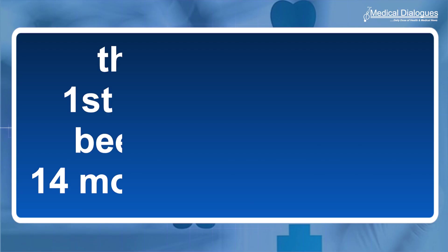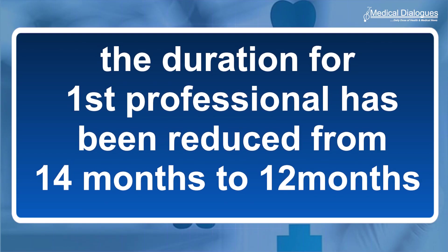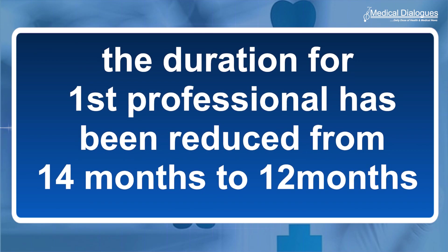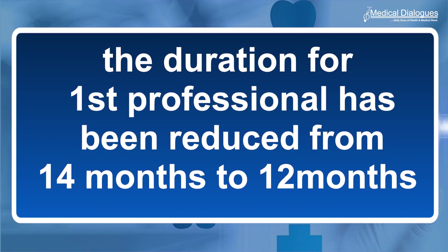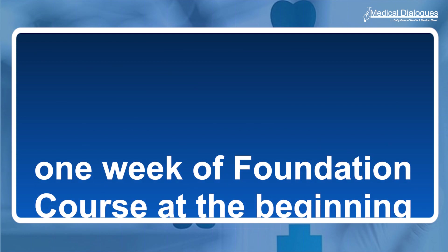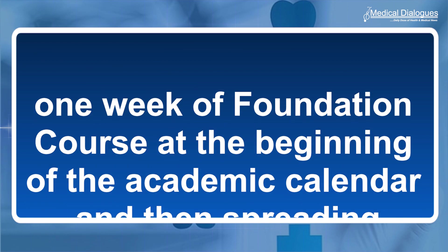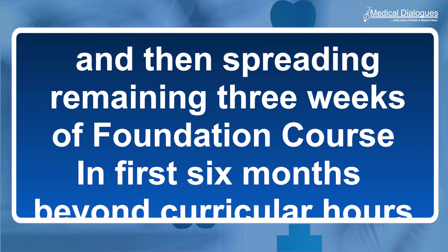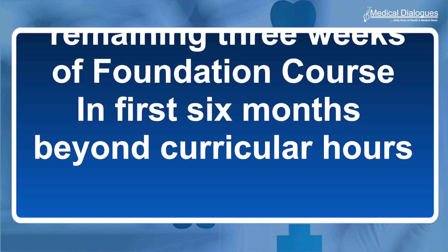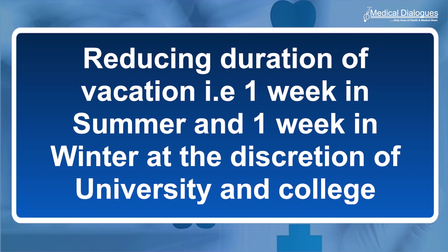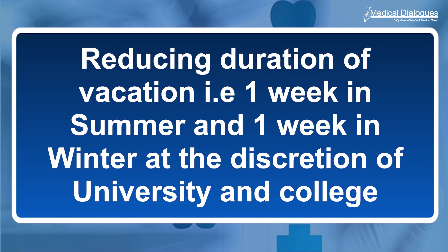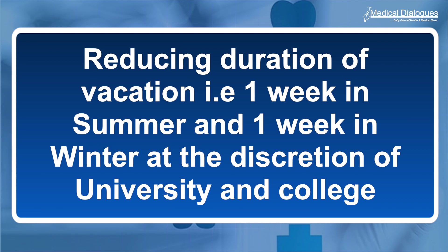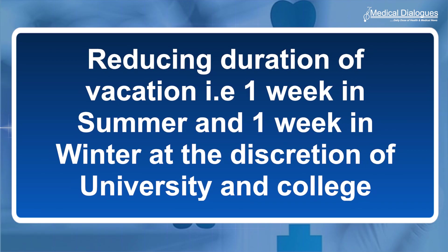Since the duration for the first professional has been reduced from 14 months to 12 months, the period can be adjusted by having one week of foundation course at the beginning of the academic calendar, then spreading the remaining three weeks of foundation course in the first six months beyond curricular hours, allocating sports and extracurricular hours for regular teaching, and reducing duration of vacation — one week in summer and one week in winter — at the discretion of the university and college.